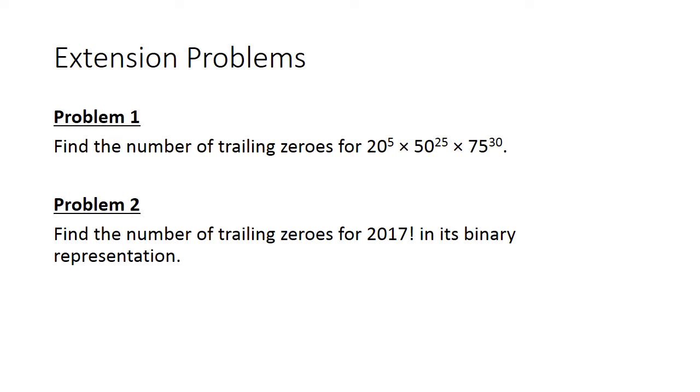Here are some problems to extend your learning. Problem 1: Find the number of trailing 0s for 20^5 × 50^25 × 75^30. Problem 2: Find the number of trailing 0s for 2017 factorial in its binary representation.